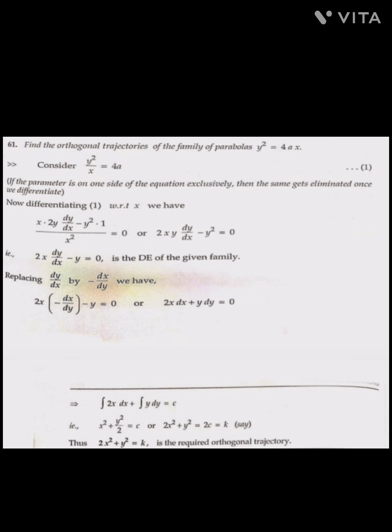Now we integrate: ∫2x dx + ∫y dy = c. Integration of 2x is x², and integration of y is y²/2, giving us x² + y²/2 = c. Multiplying by 2: 2x² + y² = k. This is the required orthogonal trajectory. Thank you.